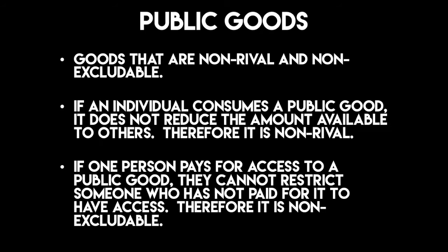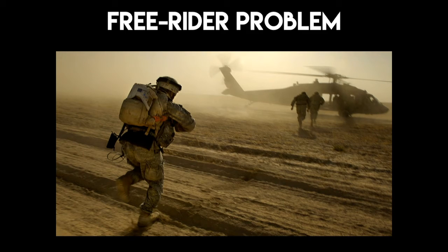The free rider problem occurs generally with public goods because you're not able to exclude anyone who hasn't paid for it. You can't restrict access to national defense or the National Health Service in the UK, so people who don't pay for it can still use it. You can even think about this in school group projects — if two of you are working really hard in a group of four, all four of you share a grade but only two did the work. That's also a free rider problem: somebody benefits without having put in any effort.